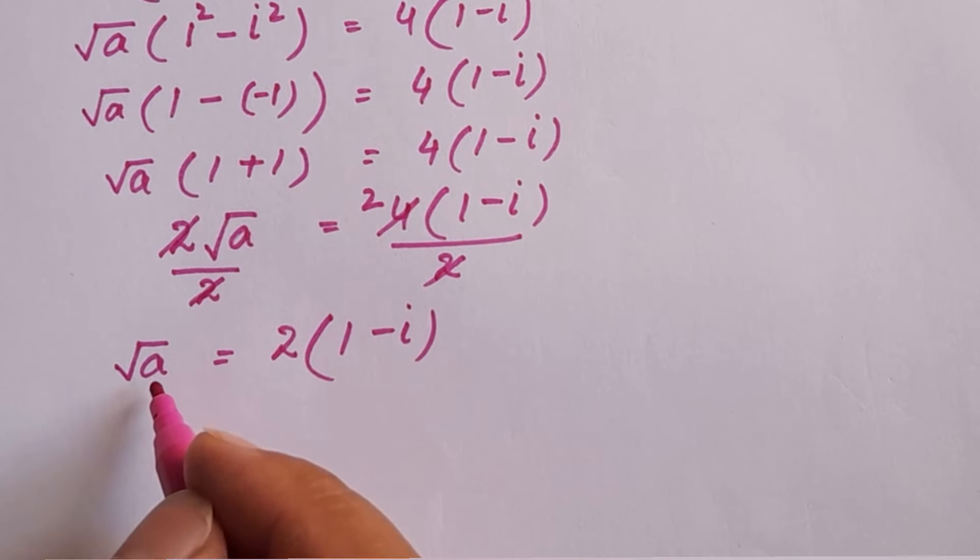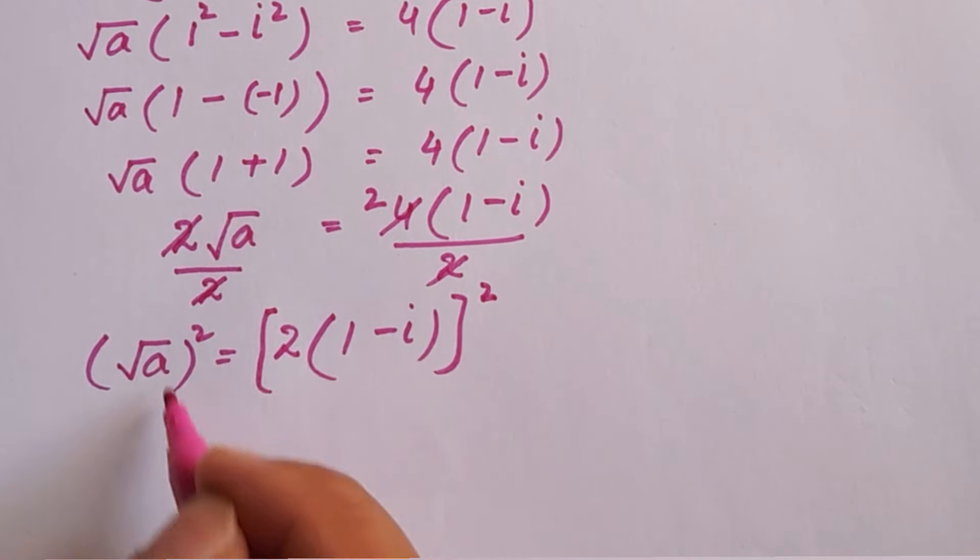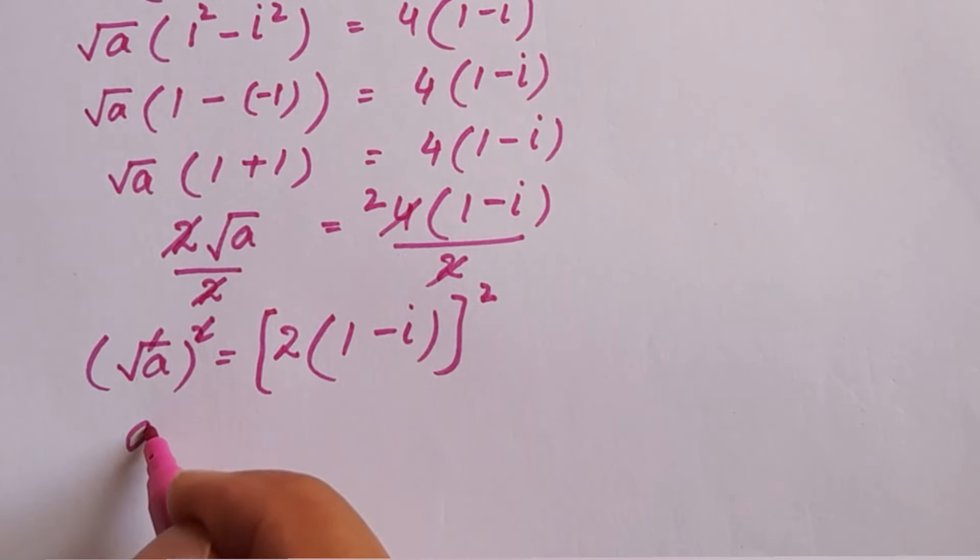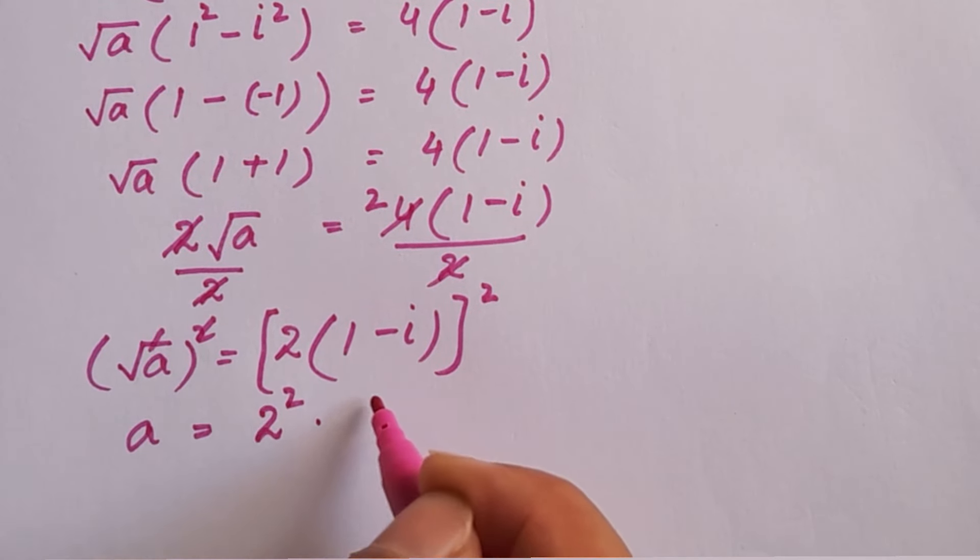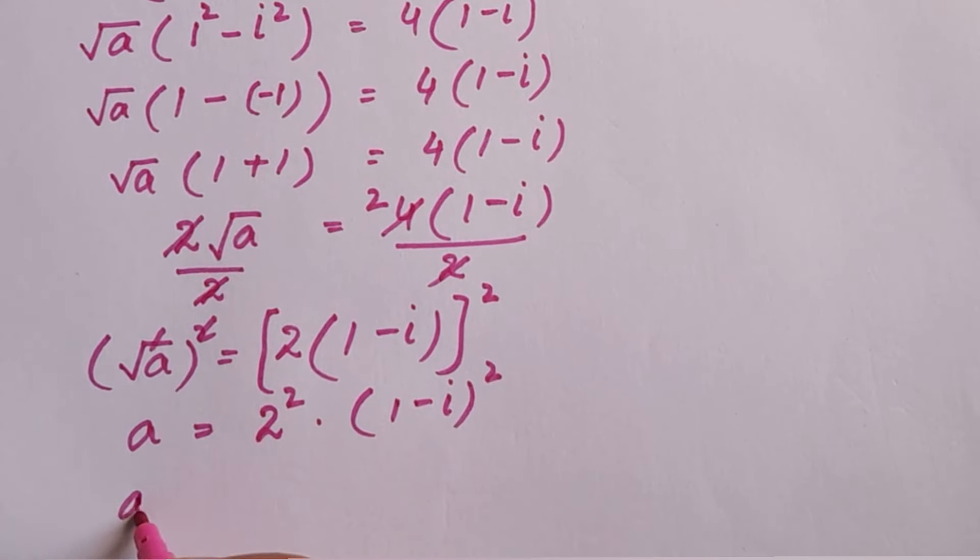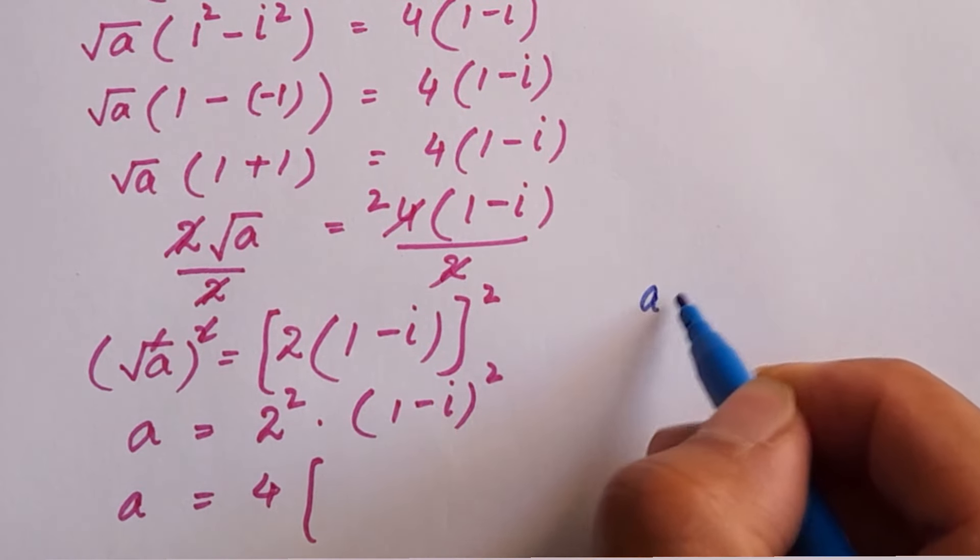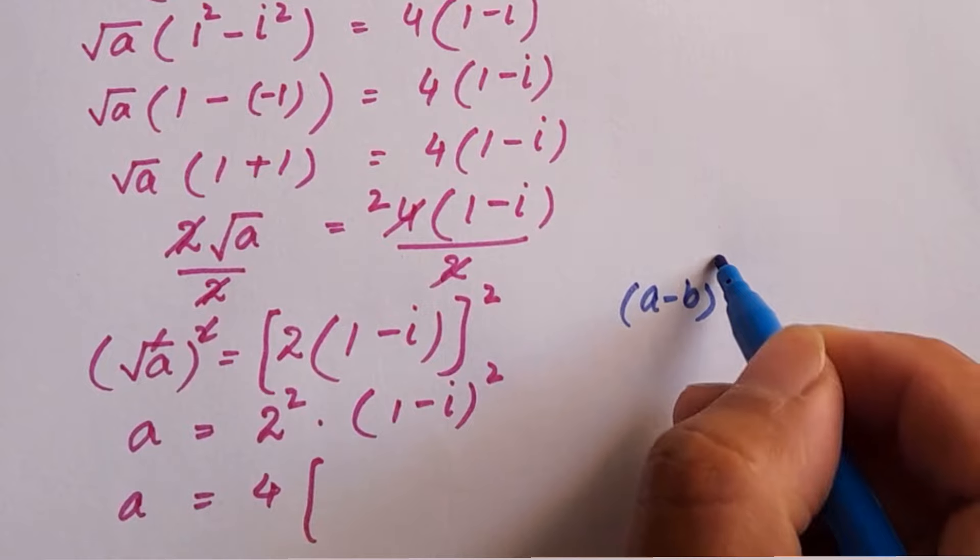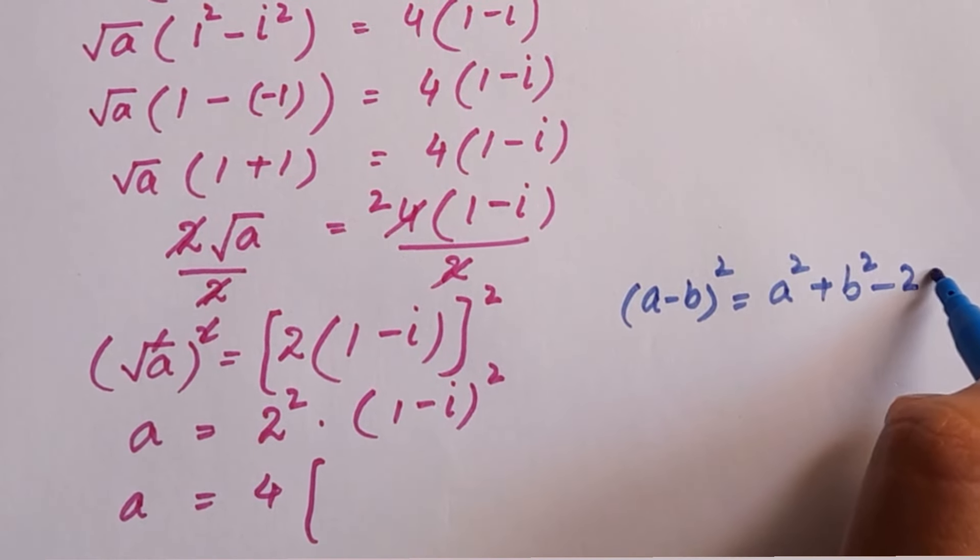We have to eliminate this root, so we are going to take square of this equation on both sides. So this square and root cancel out. A is equal to, we are going to take square separately, so 2 square times 1 minus iota square. 2 square means 4. And this is the same as a minus b whole square, which is equal to a square plus b square minus 2ab.